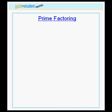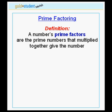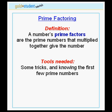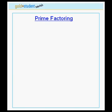This is the second tutorial on how to do prime factoring. Let's review. The definition is that a number's prime factors are the prime numbers that multiplied together give the number. The tools you need to do prime factoring are to know some tricks and to know the first few prime numbers. Let's review.